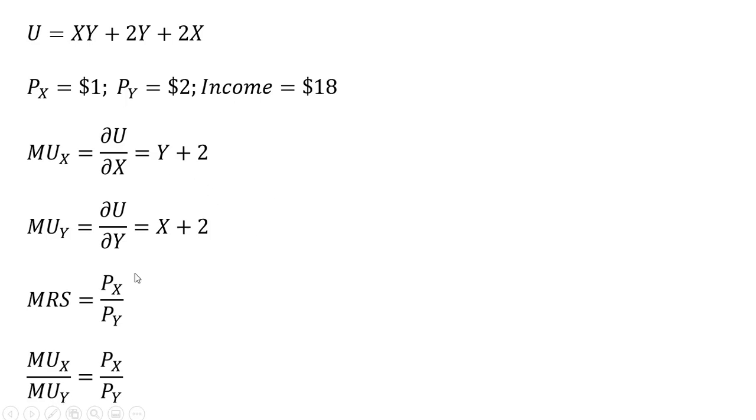So we're going to substitute our marginal utility results into this formula. After making our substitutions, we're going to simplify this. I'm going to multiply both sides through by 2, and then multiply both sides through by X plus 2.